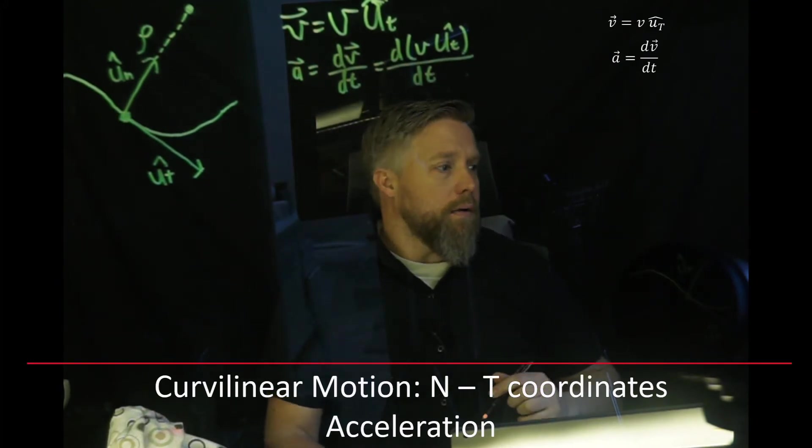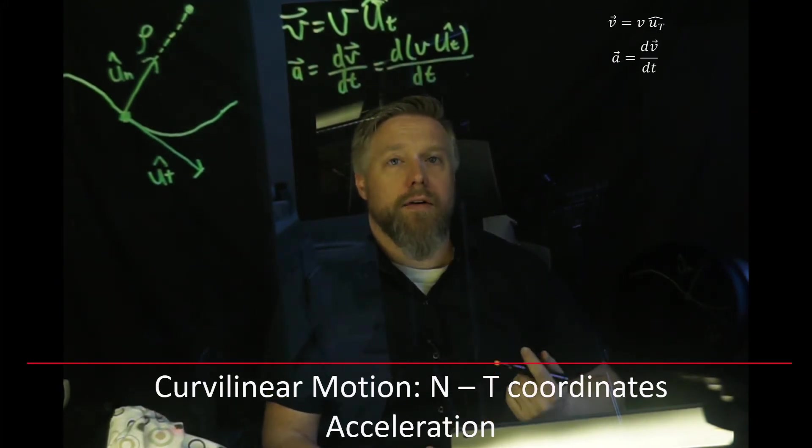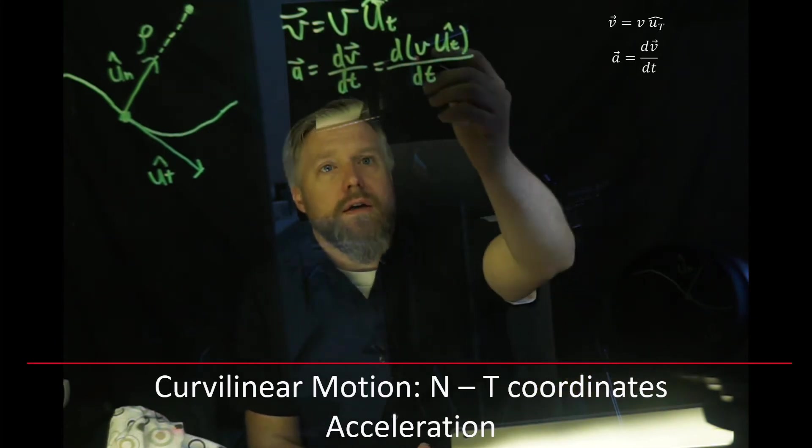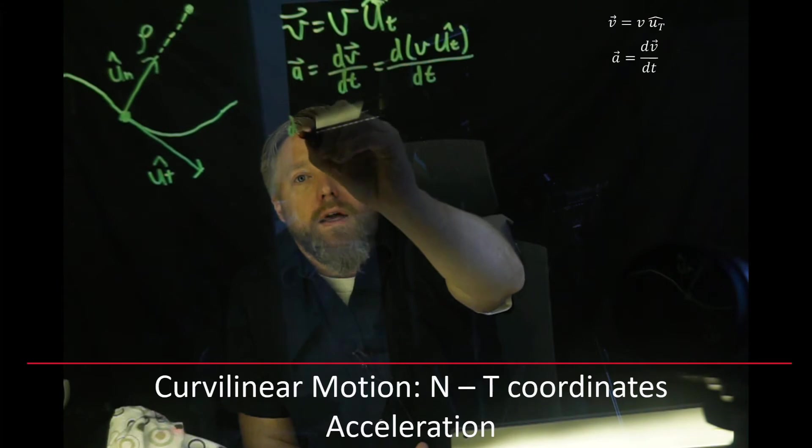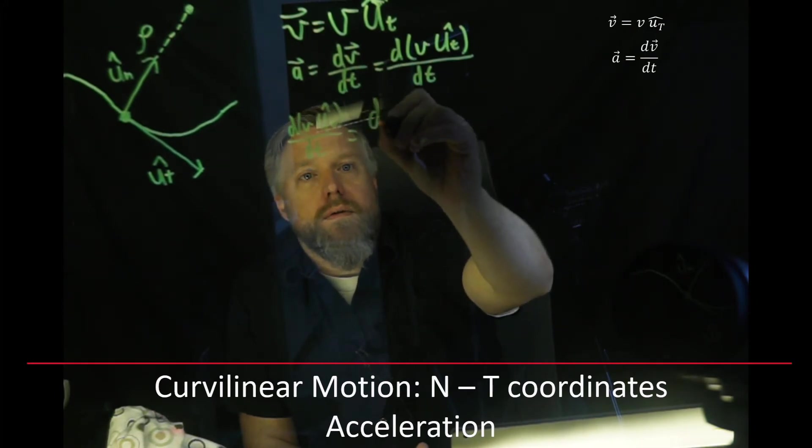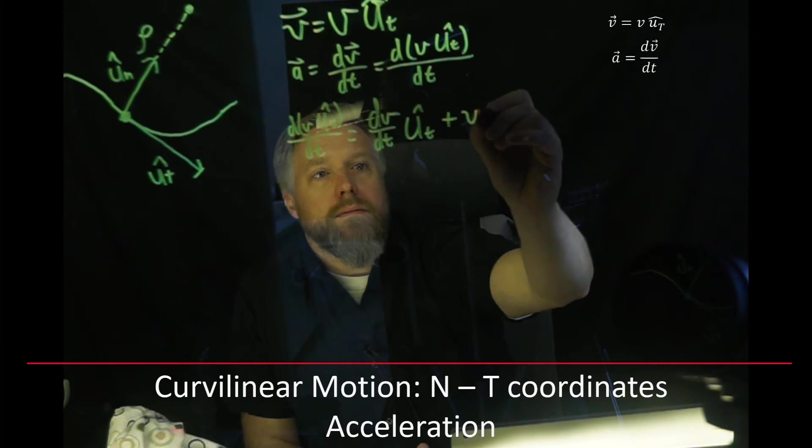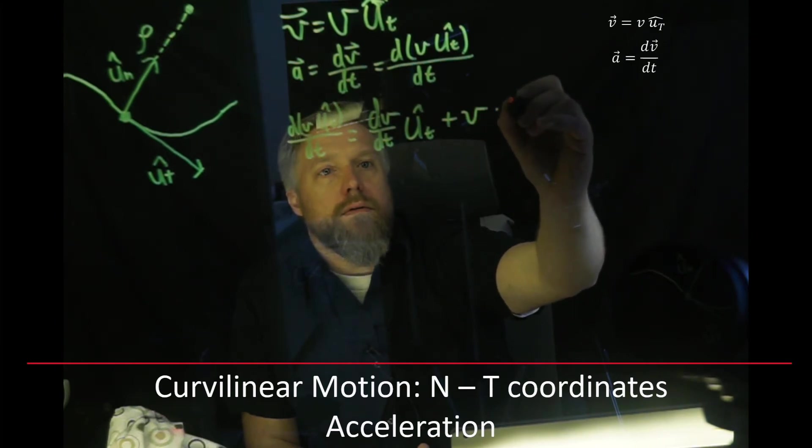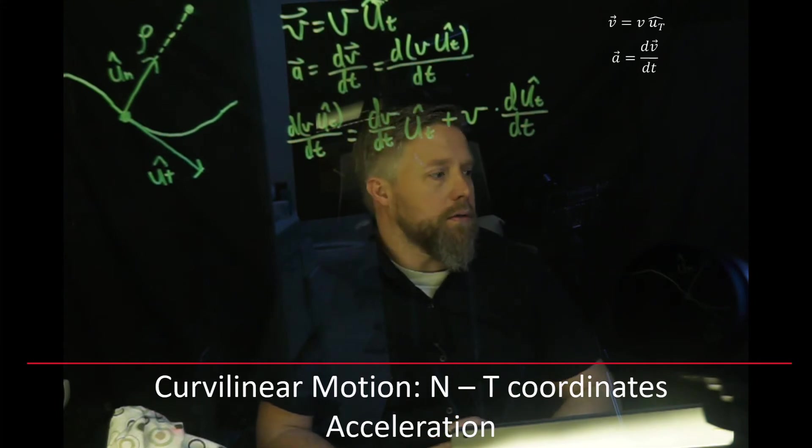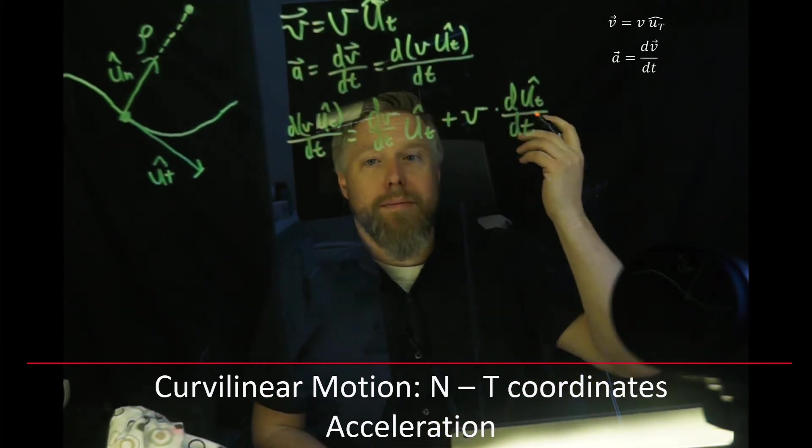Now we can just plug in our velocity vector for that V, and that would be the derivative of velocity times UT, dt. Now you notice that we're taking the derivative of a product, so of course we have to use the product rule. The product rule tells us that dv UT dt is going to be equal to the derivative of the first term, dv/dt, times the second one, plus the first term times the derivative of the second.